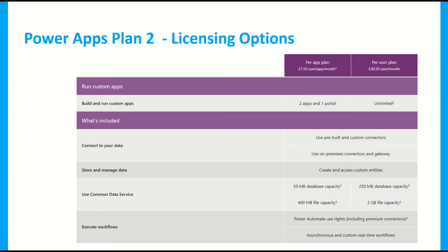The second type of PowerApps license is Plan 2, for when you want to use more of those premium features. This includes model-driven apps and PowerApps portals, both of which require a Plan 2 license. If you want to use the Common Data Service — the large database within Office 365 with pre-created tables and entities — you'll also need Plan 2. The basic Plan 2 is around £7.50 per user per month, which gives you up to two main business apps and one portal, plus additional features including premium connectors for SQL and API HTTP calls.